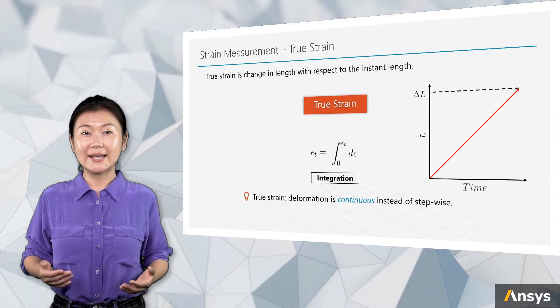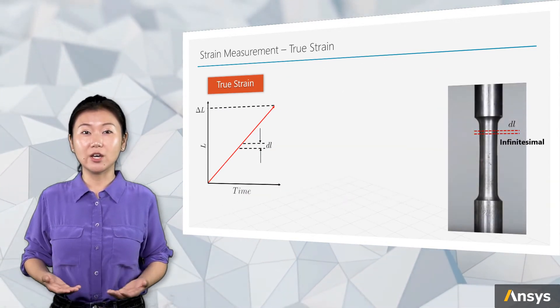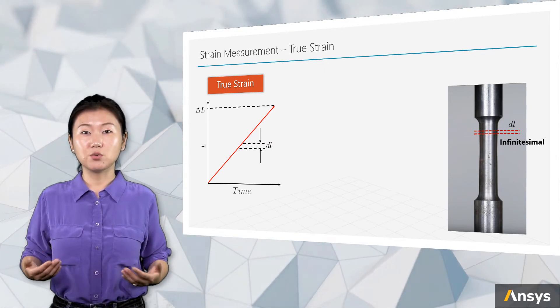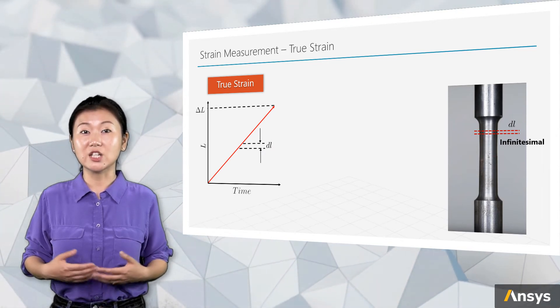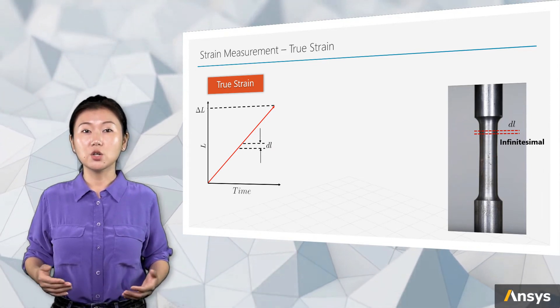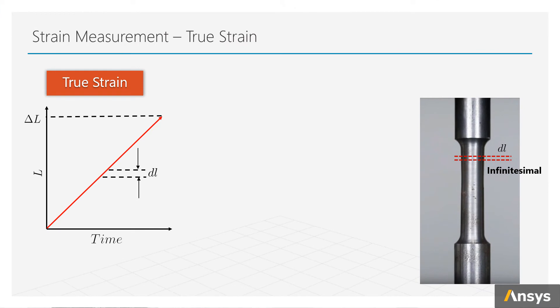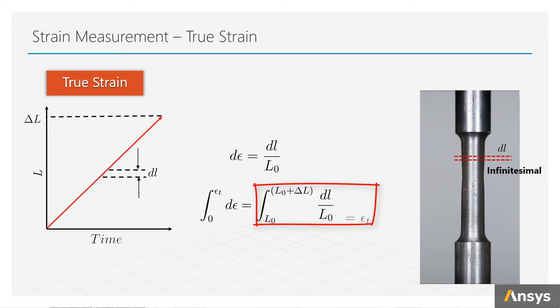So for this continuous deformation, let's take an extremely small piece of length change, dL. We call such dL infinitesimal, which means it's infinitely small. This dL can represent any infinitesimal deformation during the entire process. In another word, the total deformation is formed by an infinite number of such dL. For this infinitesimal change of length, we define an infinitesimal strain, which is dL over L. To have the strain for the entire deformation, we need to do integration for the infinitesimal strain from zero to total strain, which leads to an integration from the original length to the total deformed length. This integral form is basically the full definition of true strain measurement.